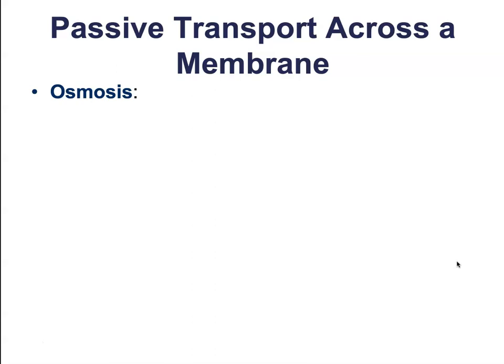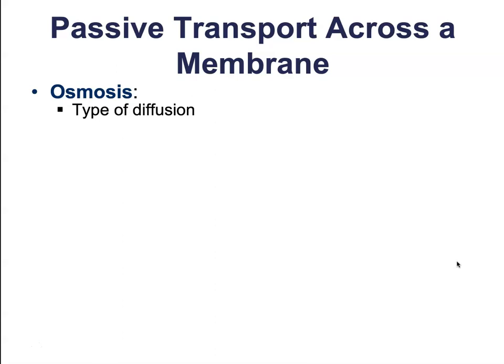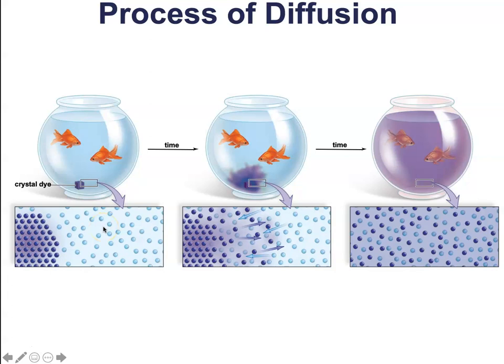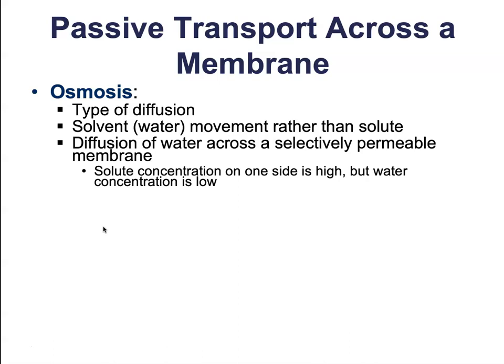Osmosis is a specific form of diffusion. The study of osmosis focuses primarily on the movement of the solvent — typically water — rather than the solute. In the earlier example, through diffusion the dye crystals moved from high to low concentration. But when we talk about the movement of water molecules, or the solvent, we call that osmosis. So diffusion usually refers to the movement of the solute down its concentration gradient, while osmosis refers to the movement of the solvent — which in this class will always mean water. The diffusion of water across a selectively permeable membrane is what we call osmosis.